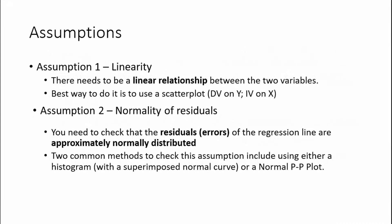There are two primary assumptions. The first is that there needs to be a linear relationship between the two variables. A linear relationship is when two variables match up to form somewhat of a straight line, and the straightness and slope of that line dictates the strength of the relationship. It's suggested that you create a scatter plot in SPSS, plotting the dependent variable against your independent variable, and then visually inspect it to check for linearity.